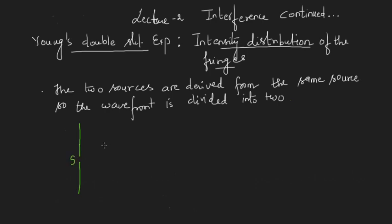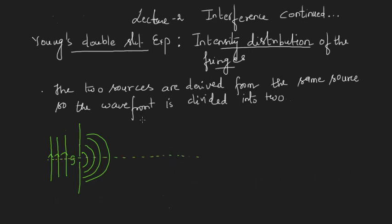How do we obtain two sources from a single source? If I have a source S and waves are incident from the left, the waves will emanate in a semicircle from this source. I then keep two slits S1 and S2 in front of S. The wavefront coming from S will be divided into two. That is why Young's double slit experiment is also said to occur due to division of wavefront.